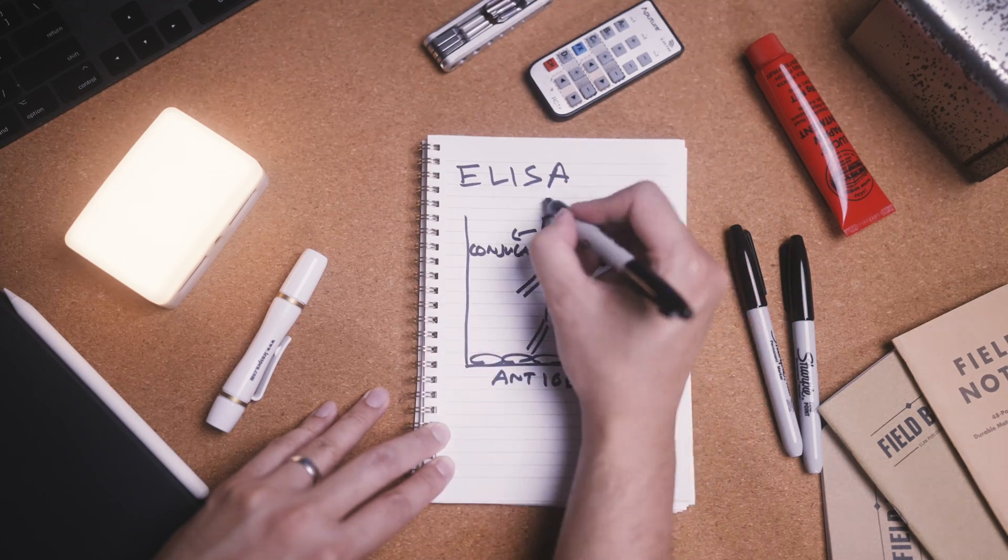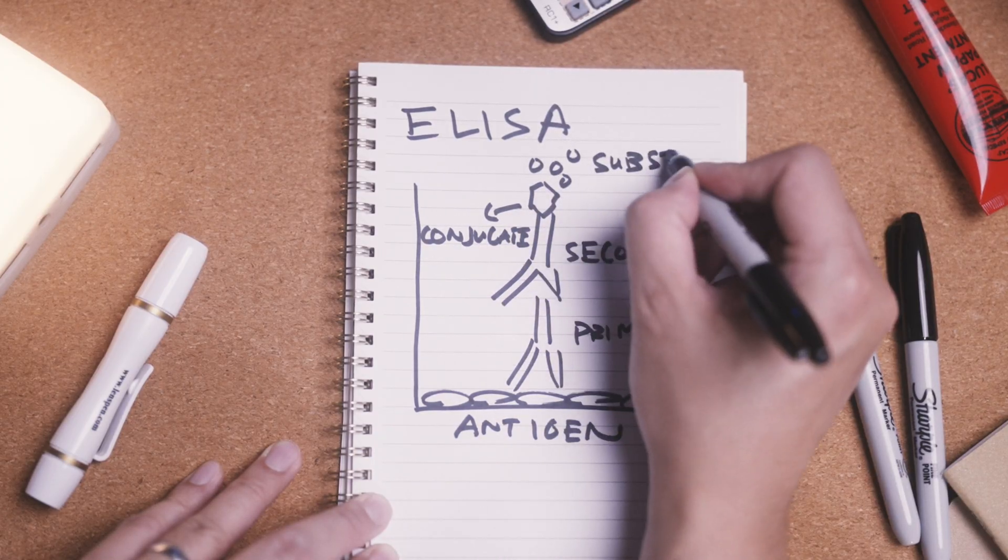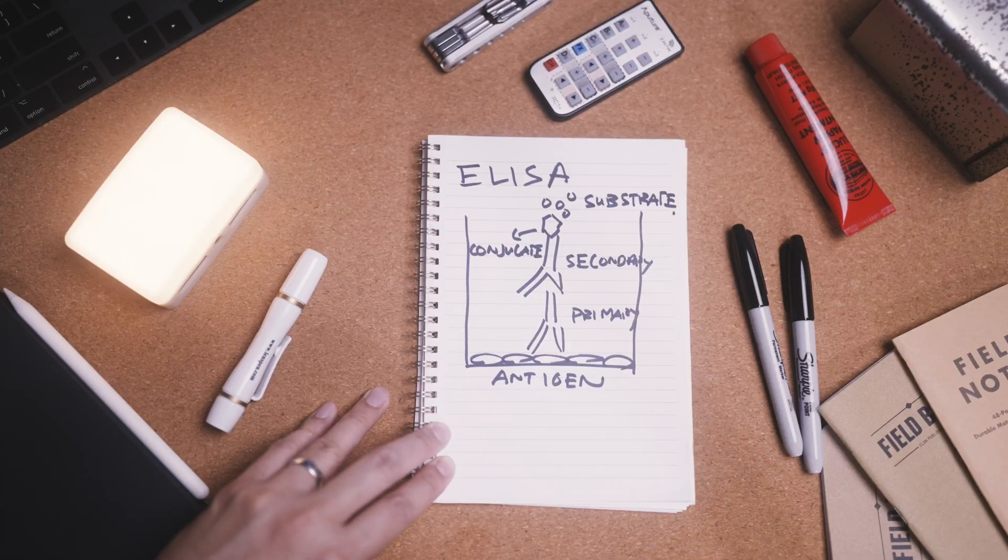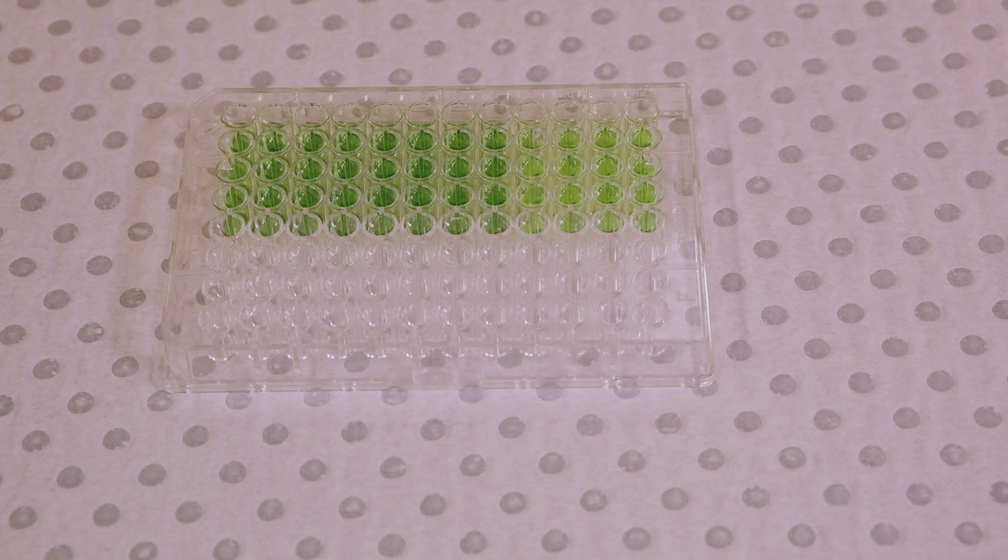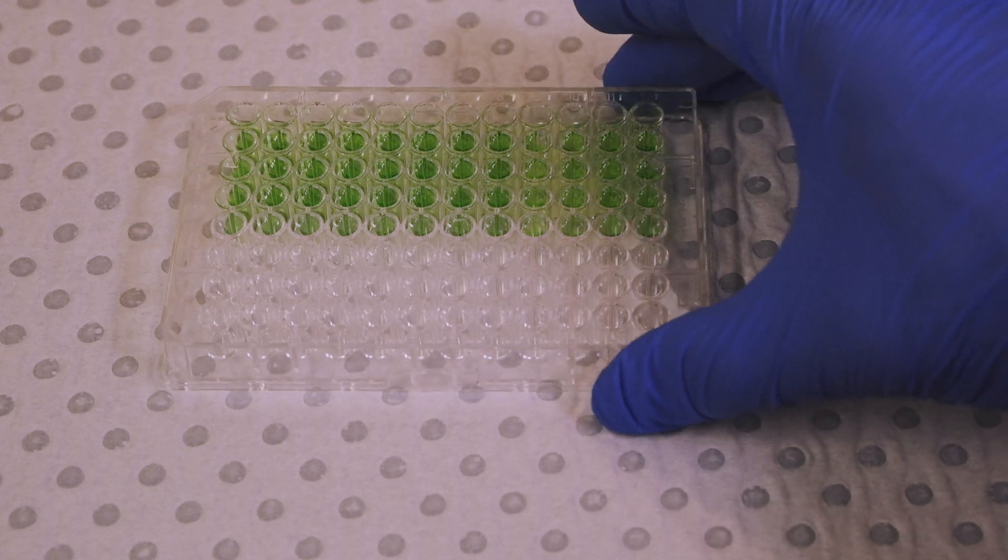The final stage is signal development, where we add a substrate reacting with the conjugate on the secondary antibody. If the secondary antibody is present, the liquid in the well will change color, and the more antibodies that bind, the more intense the color change. The intensity of this color change can later be quantified using a spectrophotometer.